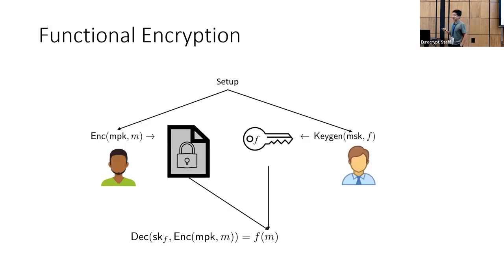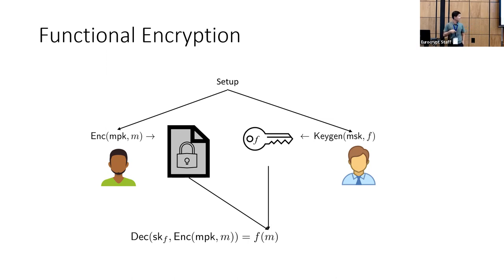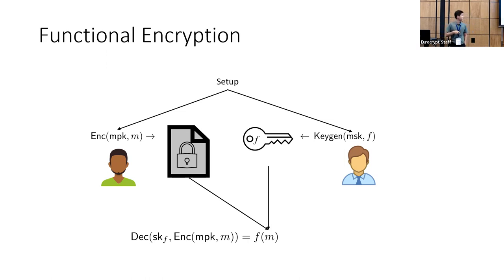What makes functional encryption 'functional' is that even though you encrypt just like any public key encryption, when you decrypt with a particular function key, what you produce is not the message itself, but the evaluation of that message on the function associated with that function key.